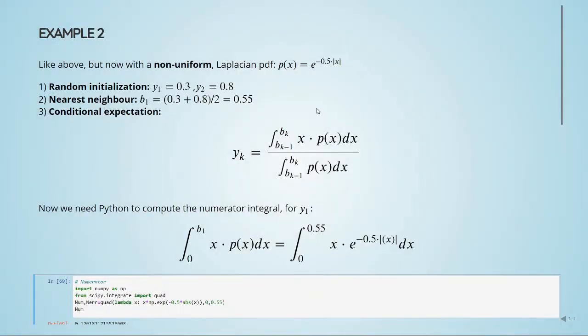Let's take a look at another example. This time it's not a uniform distribution. We will see what happens when we have a Laplacian distribution. So we have the formula for a Laplacian PDF. This probability function is given by this equation here with an exponential and the power of minus 0.5 times the absolute value of x.